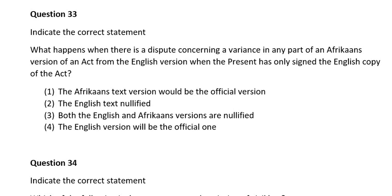Question thirty-three. Indicate the correct statement. What happens when there is a dispute concerning a variance in any part of an Afrikaans version of an act from the English version when the president has only signed the English copy of the act? Number one, the Afrikaans text version would be the official version; number two, the English text is nullified; number three, both the English and Afrikaans versions are nullified; number four, the English version will be the official one. The correct answer is number four: the English version will be the official one.